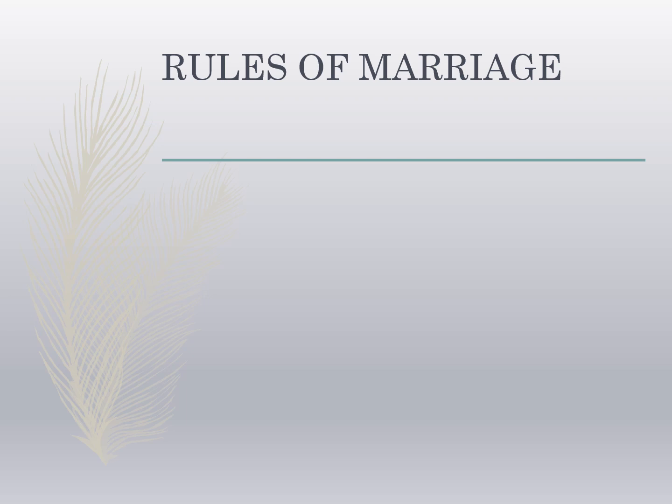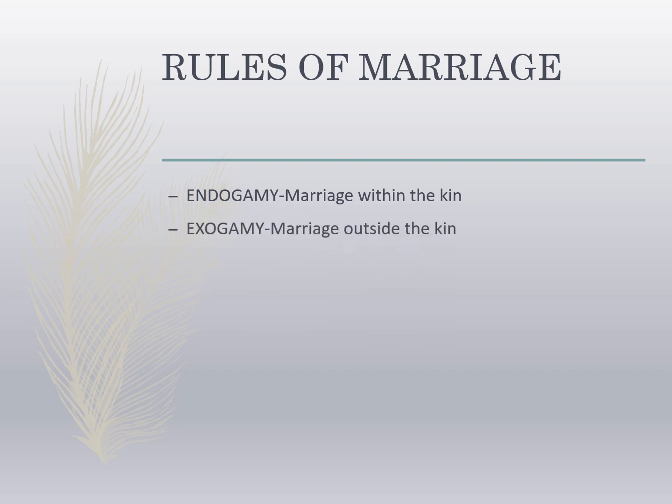This gave rise to the belief that kanyadana — the gift of a daughter in marriage — was an important religious duty of a father. Among the types of marriages: endogamy refers to marriage within a unit, which could be a kin group, caste, or a group living in the same locality. Exogamy refers to marriage outside the unit.